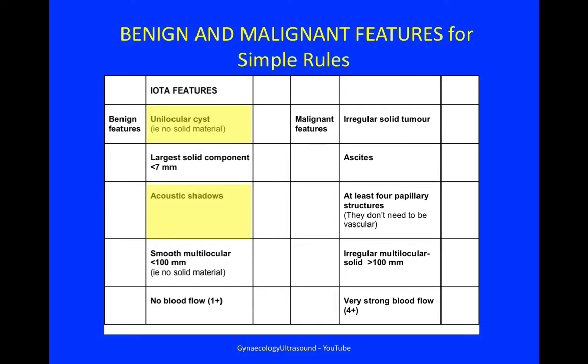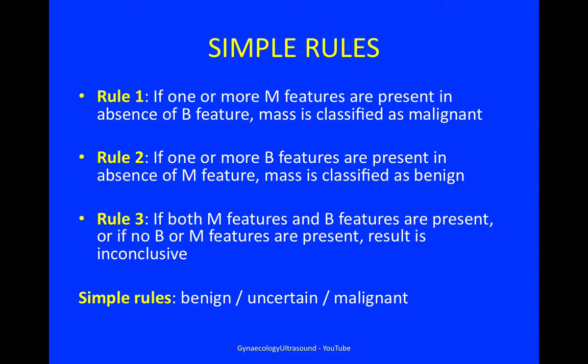It is a unilocular cyst — that means there is no solid material — and acoustic shadowing. In the absence of any malignant features, this looks to be benign. As the simple rules state, if one or more malignant features are present in the absence of a benign feature, the mass is classified as malignant. If one or more benign features are present in the absence of a malignant feature, the mass is classified as benign.